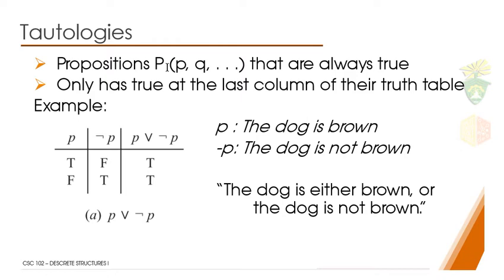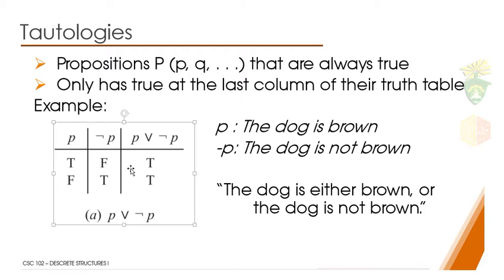In the truth table, their last result should always be true. It says here it only has true at the last column of their truth table. For example, we have the proposition P which says 'the dog is brown,' and not P which is 'the dog is not brown.' If we use the OR logical operation, we have this truth table. So P or not P will result in a value that is always true.